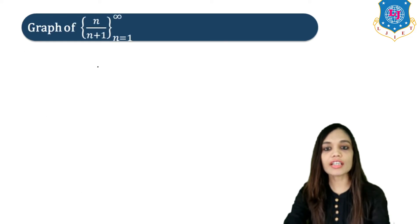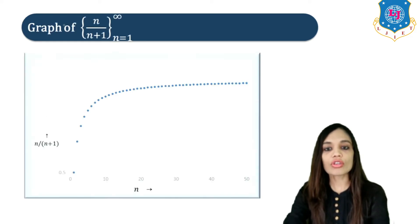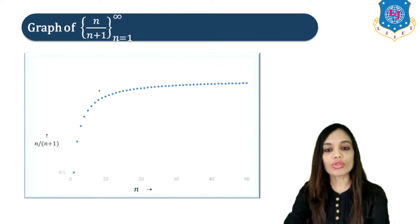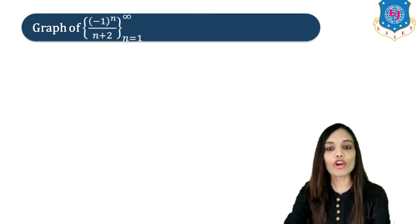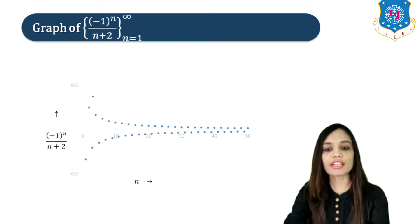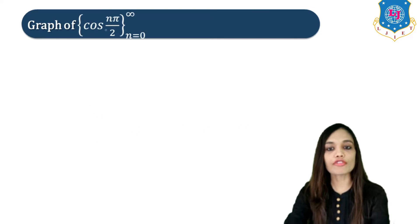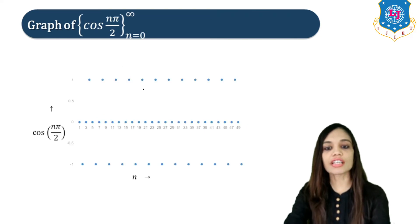Now let us study the graphs of the sequences. First, the graph of N/(N+1) — you can see the graph here. Next, the graph of (-1)^N / (N+2) is shown. And finally, the graph of cos(Nπ/2) is displayed.